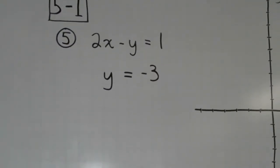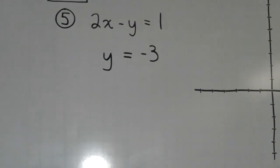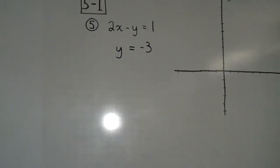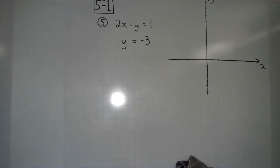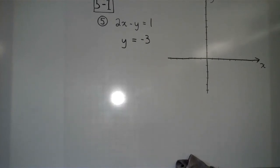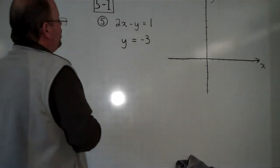Okay, Algebra 1, 5-1. What we were looking at is graphing two equations to find the point of intersection called the solution. This is problem number 5 from your worksheet.